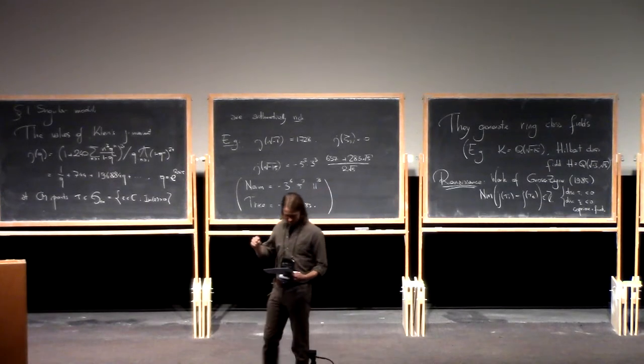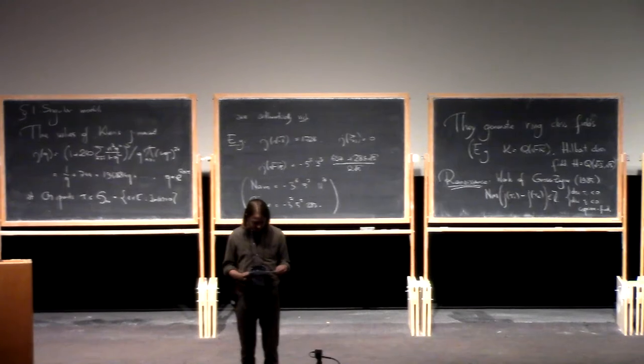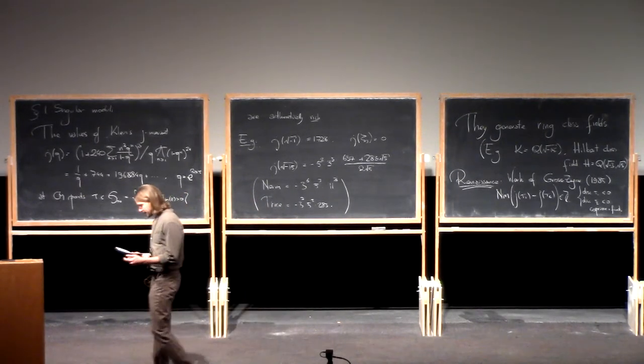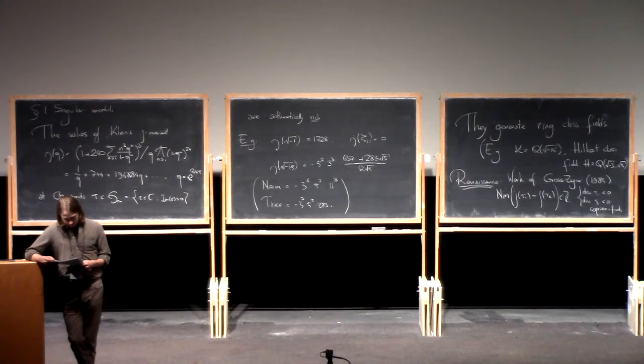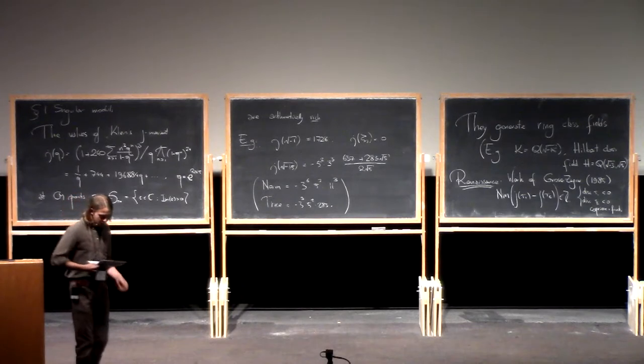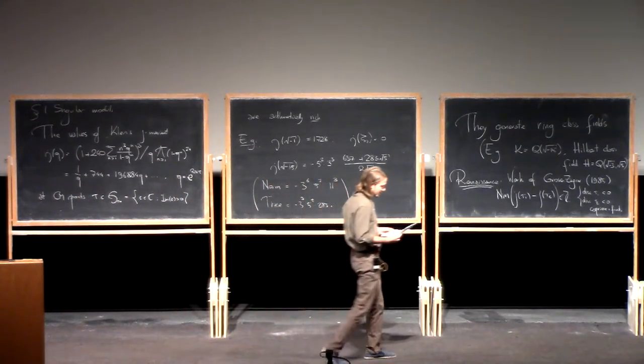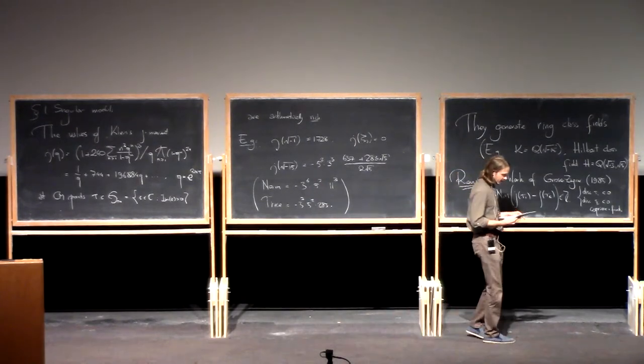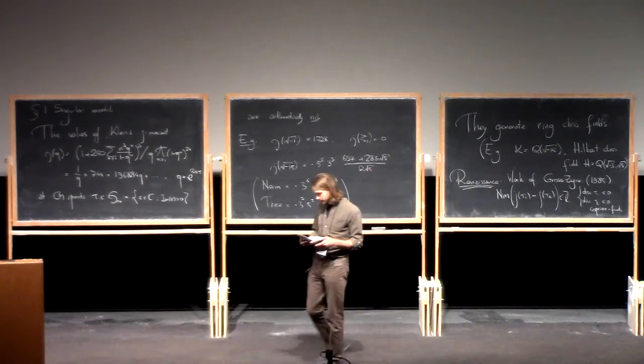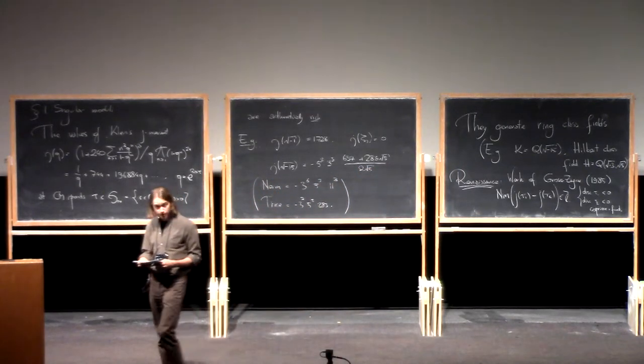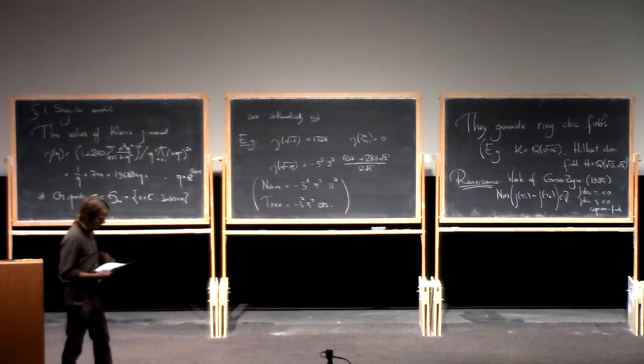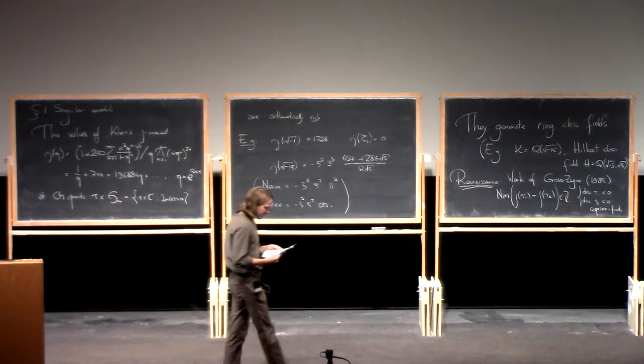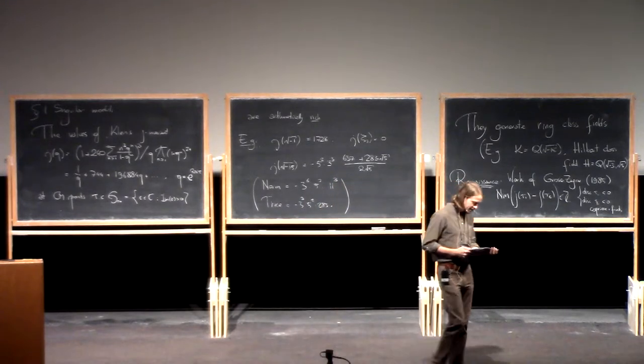Gross says: singular moduli were studied intensively by leading number theorists of the 19th century. They're algebraic integers which generate certain abelian extensions of imaginary quadratic fields. The theory was believed to have been brought to a satisfying completion in the early 20th century. That was before Don got his hands on it. In early 1983, Don sent me an amazing letter from Japan containing a proof of a factorization formula for the integer which is the norm of the difference of two singular moduli.